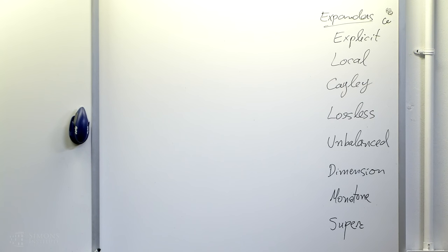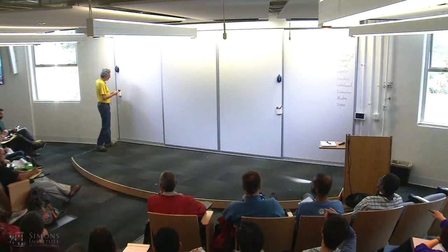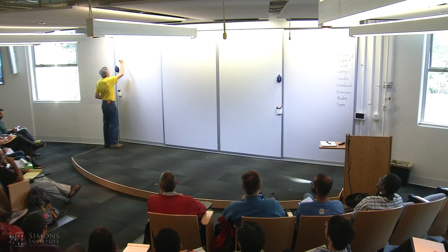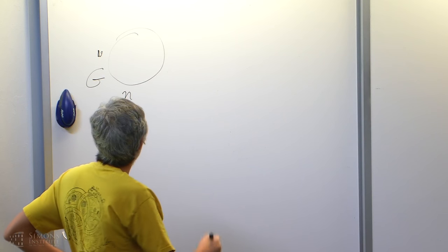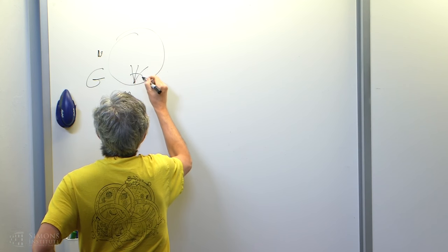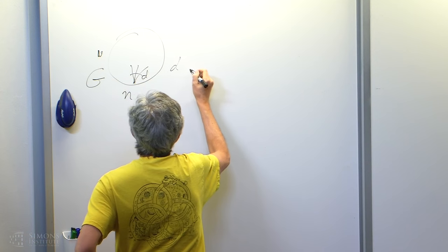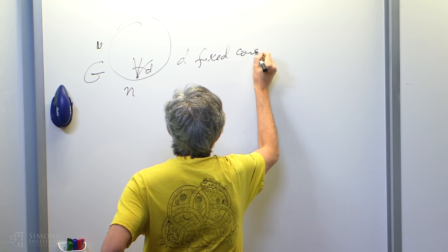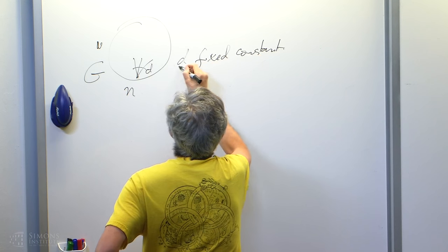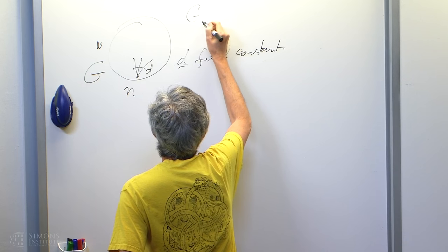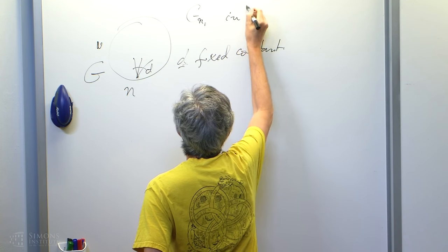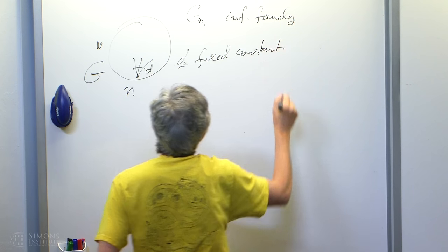So eventually I'll have to make some selection, but let me start. So just to get everybody on the same page, we'll be talking about graphs. Graph G, they'll have n vertices, and you should think of n as large going to infinity, and of degree d, or at most d, where d will be a fixed constant. So I'm going to infinity. I mean, in your mind you should think really... So this is G, but in your mind you should think of G_n I and an infinite family of graphs.